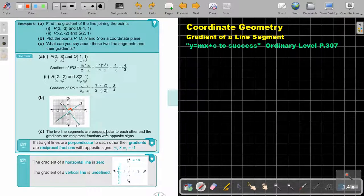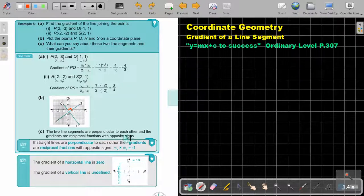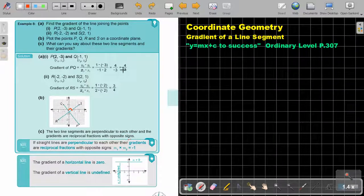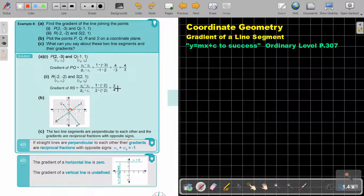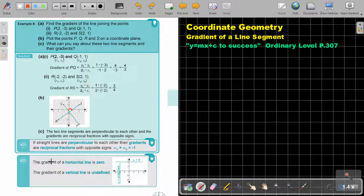So the two line segments are perpendicular to each other. And the gradients are reciprocal fractions with opposite signs. Can you see? So 4 over 3. What will be the reciprocal fraction? 3 over 4. And this one is negative and this one is positive. So opposite signs. So take note.